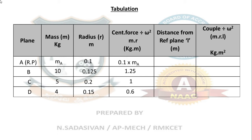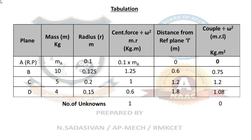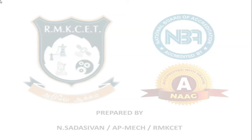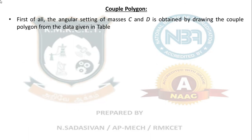Therefore, I am going to do the couple polygon first — whichever polygon has fewer unknowns, that is the one to do first. The angular setting of the masses is obtained by drawing the couple polygon from the data in the table. Assume the position of mass B is horizontal; mass A is unknown so leave it. The values for the couple polygon are A, B, C, D in proper order with no changes.